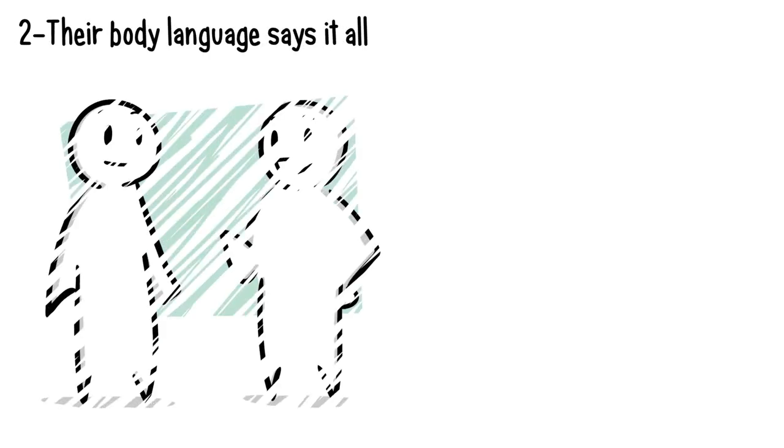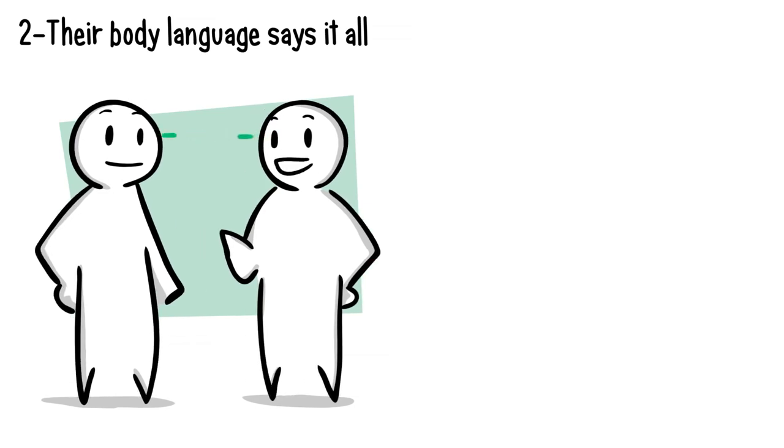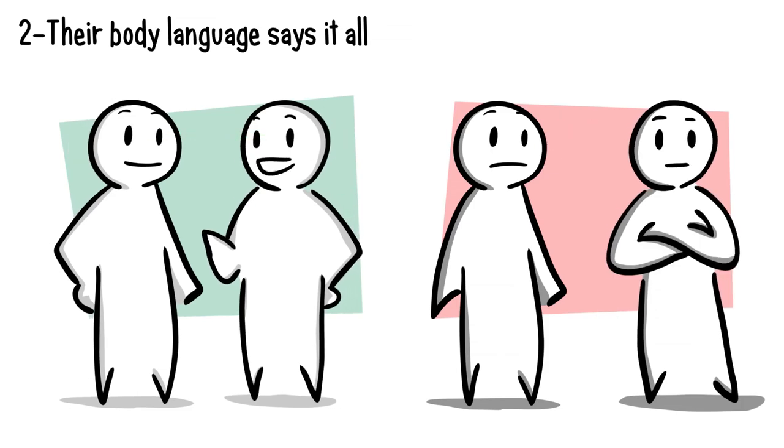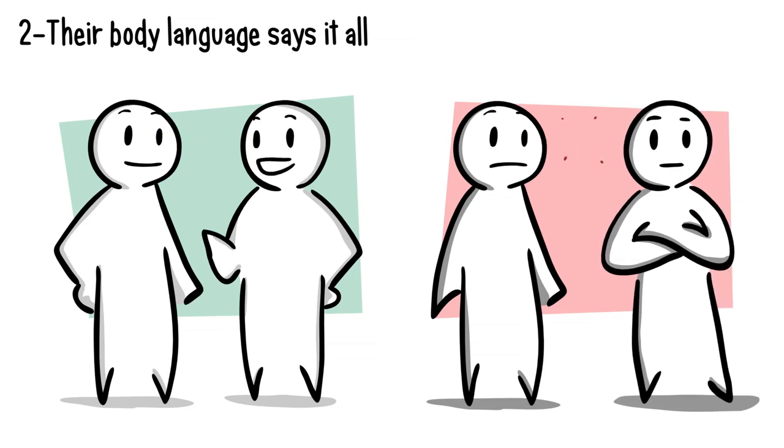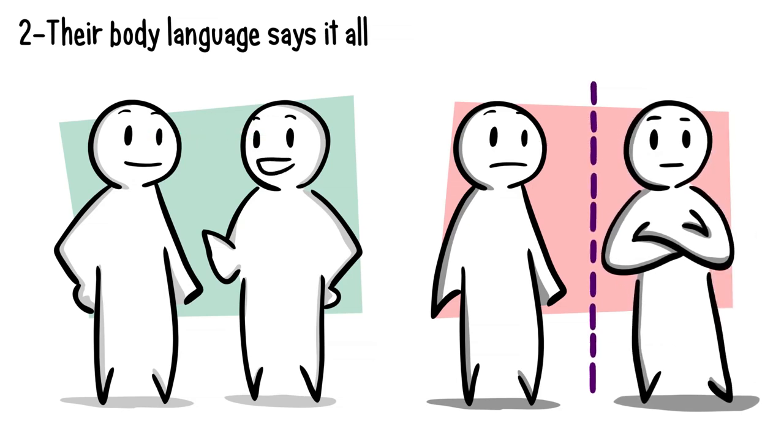Number 2. Their body language says it all. When we like someone, we have a tendency to make eye contact, mirror their body language, and lean in closer. But when someone dislikes you, they will avoid eye contact, cross their arms, and lean away from you. They do this in order to protect themselves from you, creating an invisible barrier that keeps you out. Harsh, right? But it's a common defense mechanism humans use.